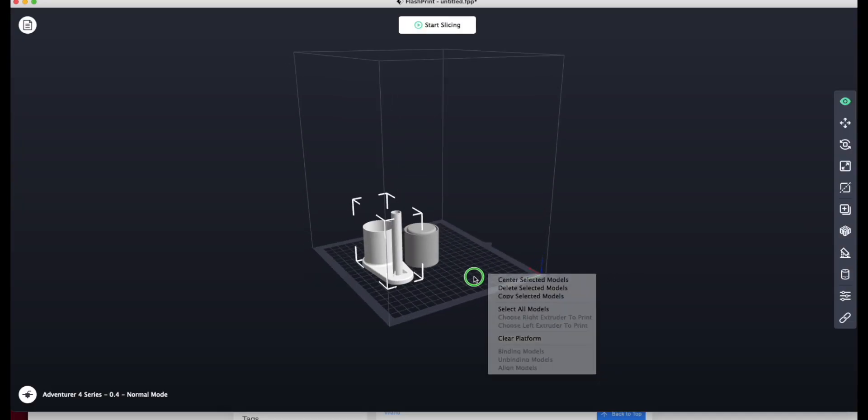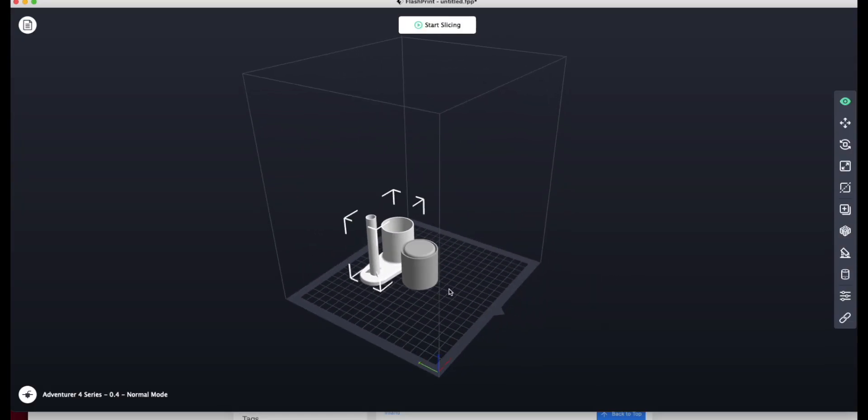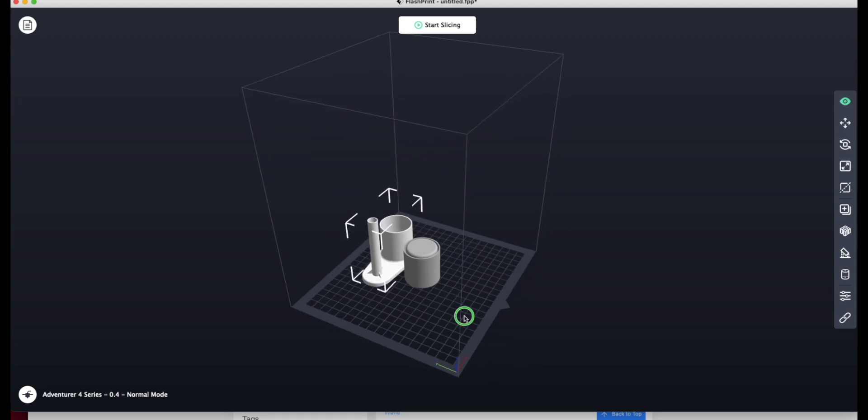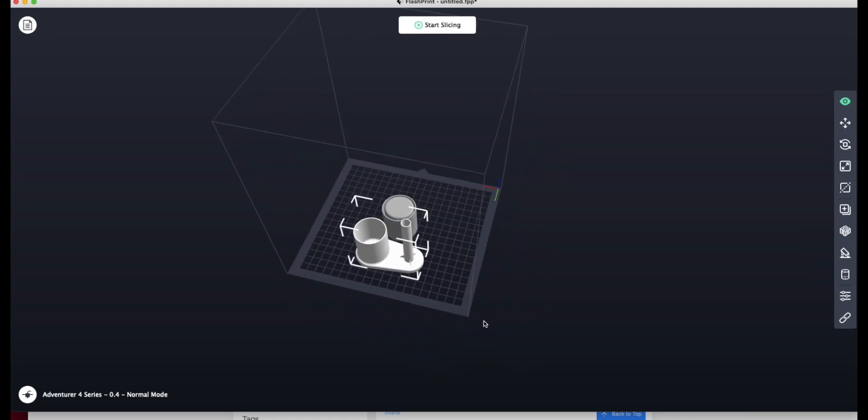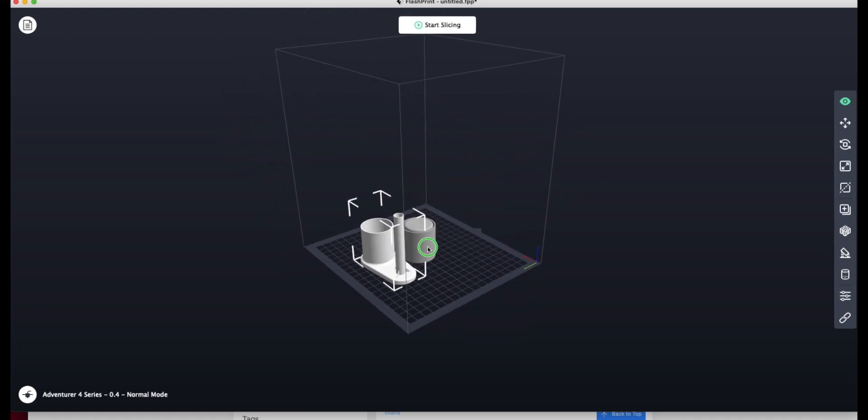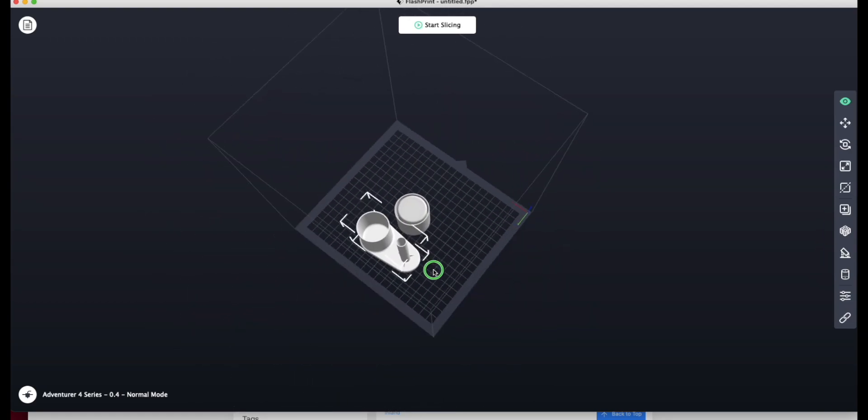So I've got FlashPrint loaded up here, and what I've done is I'm going to print the plunger and the base part in the same material. I've got some gray Overture PLA Pro, which has got a little bit stronger tolerance than regular PLA, so I'll try it with this here for this part anyway.